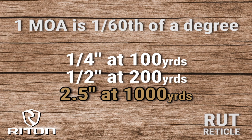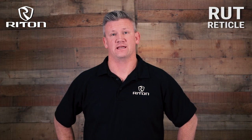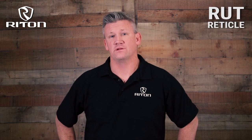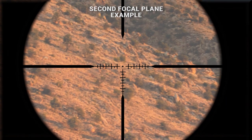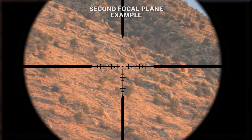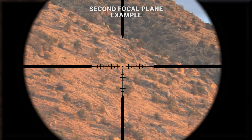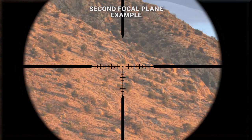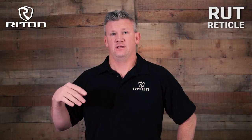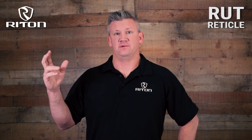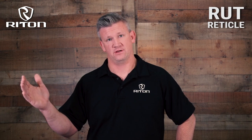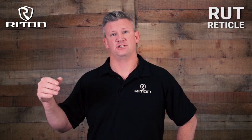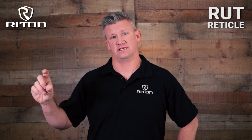Now let's talk second focal plane. What second focal plane means is our reticle inside our optic is not going to change, or appear to change, throughout the magnification range. This is important to know because if you have a 20-power scope with, say, two minute of angle hash marks in it,